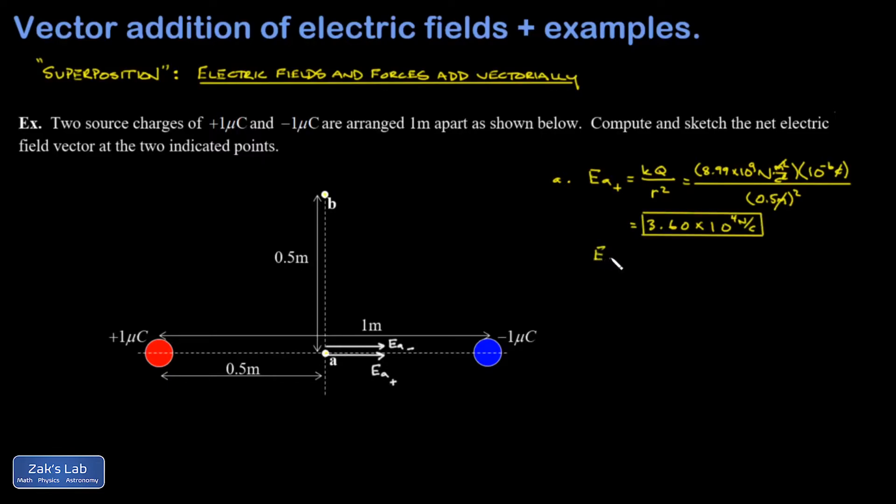All right, what about E_A minus? That's going to be KQ over R squared. But everything is the same there, except for the minus sign that you would have on the Q. And that just means the electric field is pointing toward that negative charge. So I know I've got exactly the same magnitude.